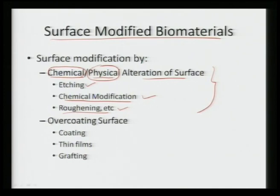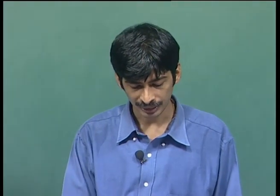A second technique is to coat or deposit a different material on the surface of the implant material. We can over-coat the surface of the implant by certain coatings, by implanting thin films, or by grafting. So there are two kinds of techniques: chemical or physical alteration of the surface, or over-coating by coatings, thin films, and grafting.